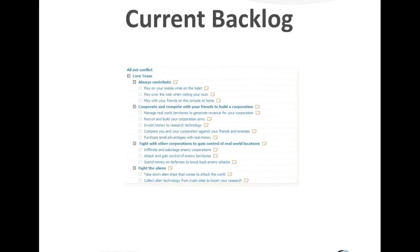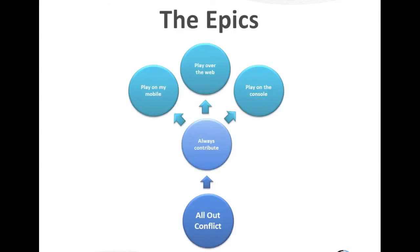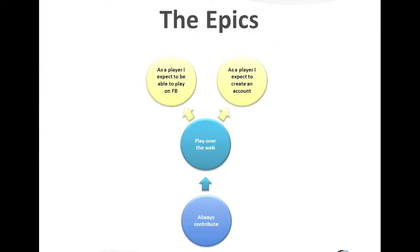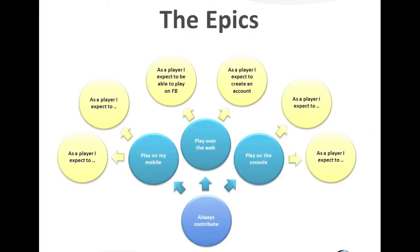Looking at the backlog, we can see how we're structuring it so that all the values are added in a hierarchical way. The next step is adding another layer using user story terminology — the epics. For 'play over the web,' we add two stories: as a player I expect to be able to play on Facebook, and as a player I expect to create an account. We do this for all the value support. What you can see is that we're building an onion from the inside out — adding layers but not going into depth first, just layer by layer.